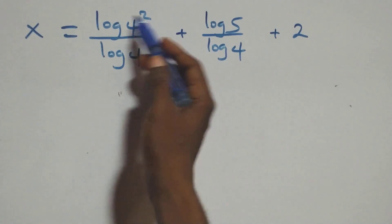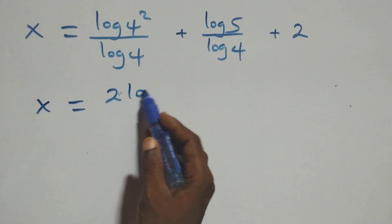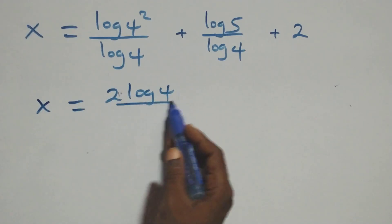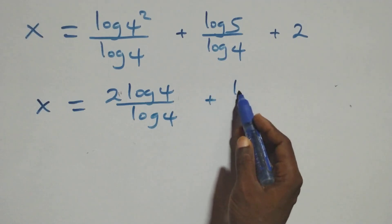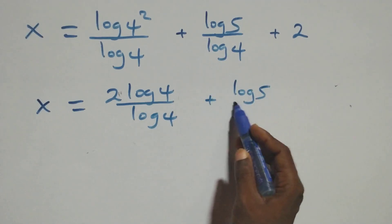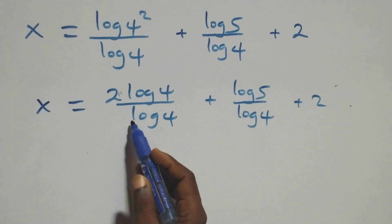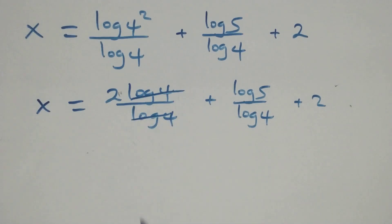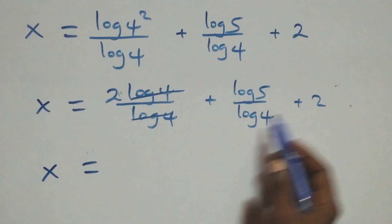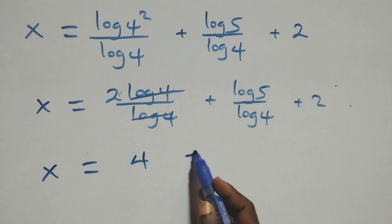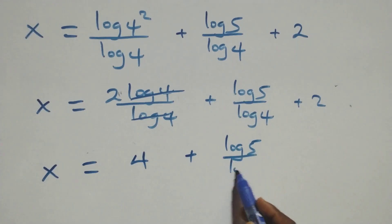We apply the power log rule: the 2 comes down. So x equals 2·log 4 over log 4 plus log 5 over log 4 plus 2. Log 4 cancels, leaving 2. So x equals 2 plus 2 plus log 5 over log 4, which gives x equals 4 plus log 5 over log 4.